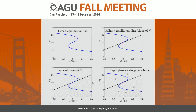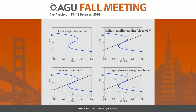Running through how this works: we have our ocean equilibrium line — a cubic representing the traditional Stommel-type instability. Then we have a salinity equilibrium line, essentially the slope of lambda, the runoff parameter. On a plot of Q against freshwater forcing, lines of constant salinity are shown — if you need to move rapidly, you must move along a line of constant Arctic salinity.